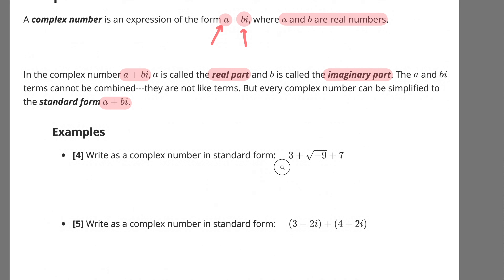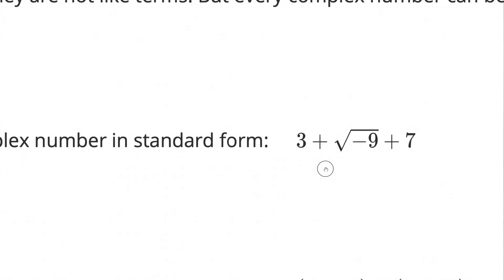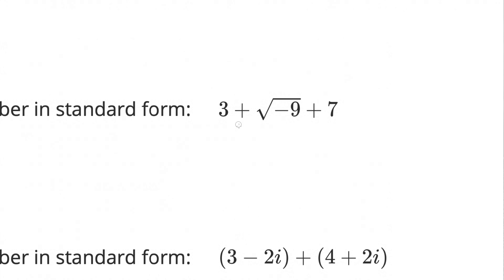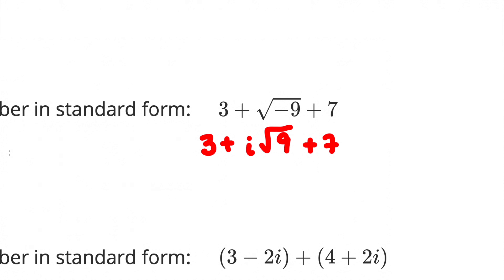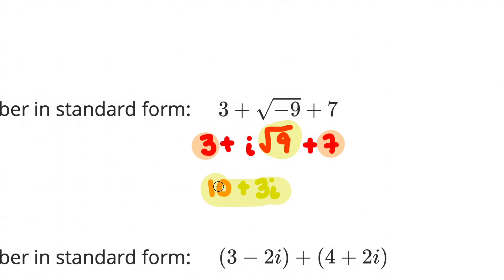We're going to do some examples showing standard form. The first one says write as a complex number in standard form. First, factor out i from the radical term: i·√9. Combine the real parts: 3 + 7 = 10. Then √9 = 3, so the imaginary part is 3i. The final answer is 10 + 3i.